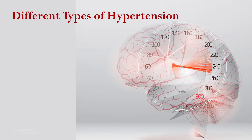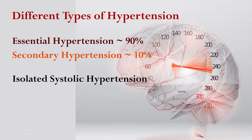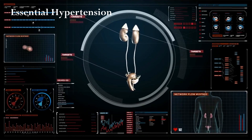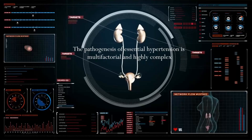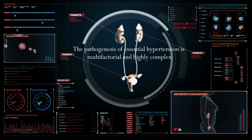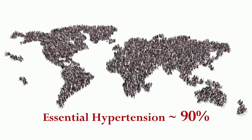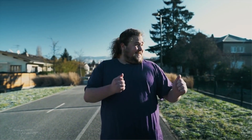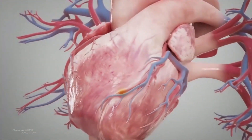There are mainly two types of hypertension: essential hypertension and secondary hypertension. Additional types include isolated systolic hypertension, hypertensive crisis, and resistant hypertension. Essential hypertension, also known as primary or idiopathic hypertension, is the most common form — affecting around 90% of the population worldwide — and develops without a specific underlying cause. It often develops gradually and is typically asymptomatic in its early stages; if left untreated, it can lead to serious health complications.